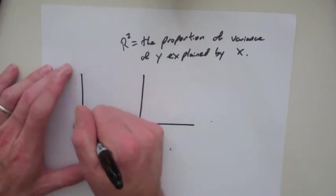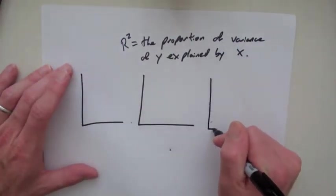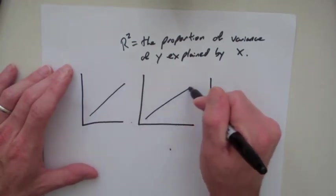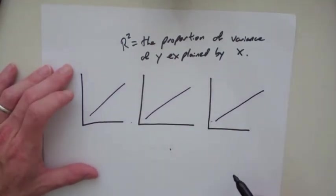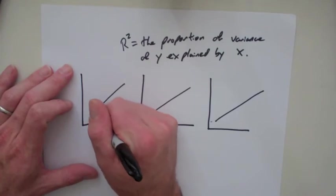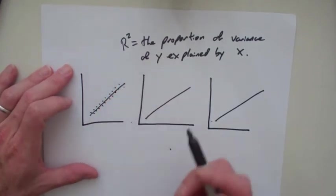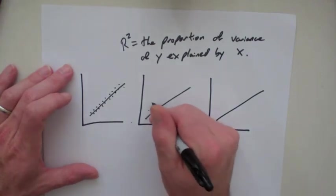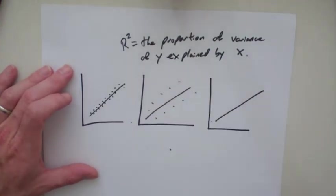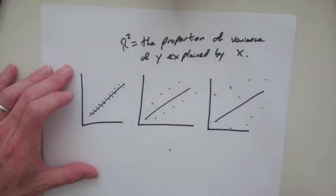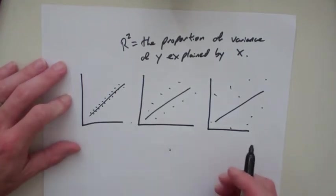Let's take three circumstances. We're going to put the same line in each and here I'm going to put the points very close to the line. We've got a really great fit, less fit, very little fit. Now, the r-squared describes the extent of this fit.